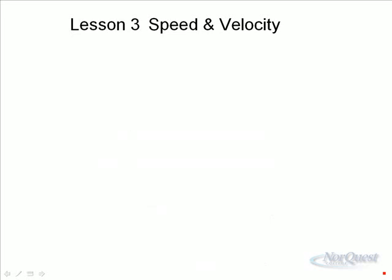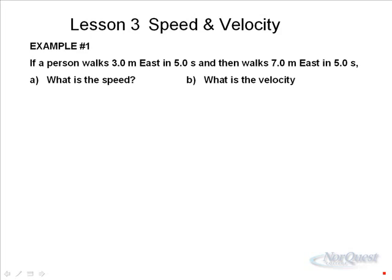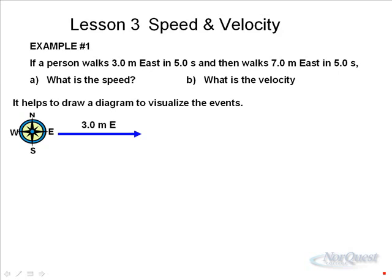Probably the best way to understand the difference between speed and velocity is to look at a couple of examples. So we'll look at three straightforward examples. Example number one, a person walks three meters east and then walks seven meters east. The first part of his motion takes five seconds. The second part takes five seconds. What's the speed? What's the velocity? It always helps in physics to draw a diagram to help you visualize these events.